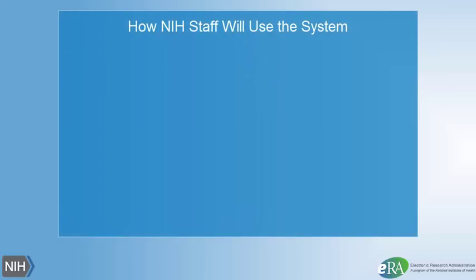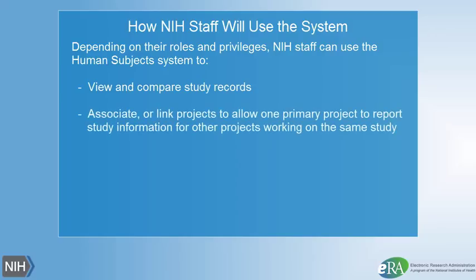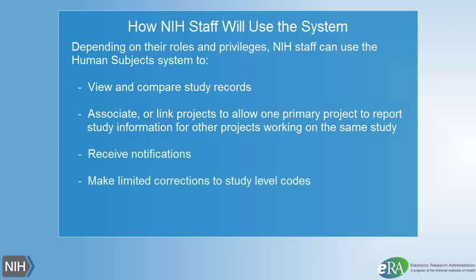Depending on their roles and privileges, NIH staff can use the Human Subjects System to view and compare study records, associate or link projects to allow one primary project to report study information for other projects working on the same study, receive notifications, make limited corrections to study-level codes, and delete duplicate or unfunded studies.